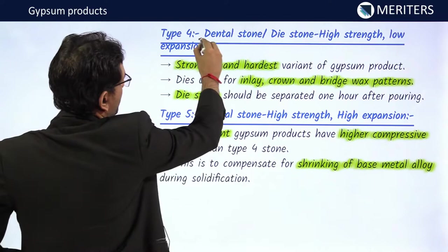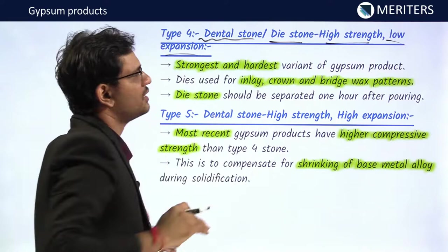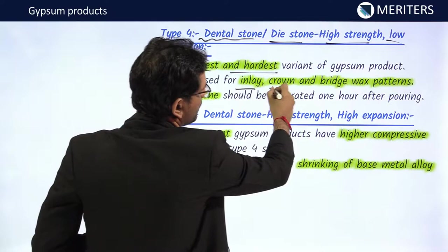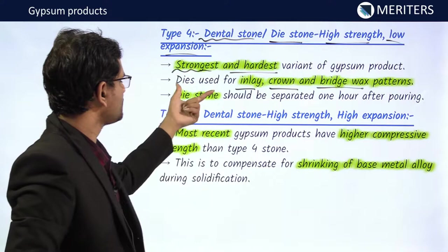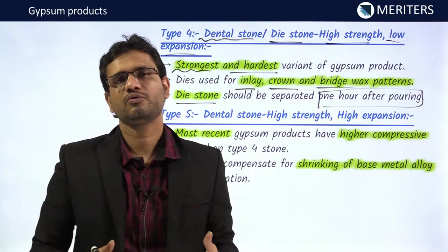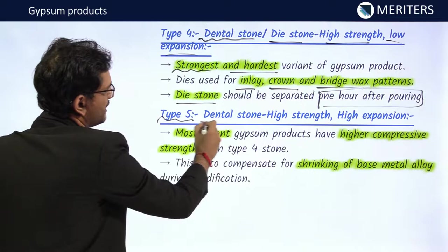Type 4 is the die stone — high strength, low expansion. It is called die stone because it is used for making dies. It is the strongest and hardest variant of gypsum products and is used for inlay, crown, and bridge wax patterns. The die stone should be separated from the impression at least one hour after pouring.